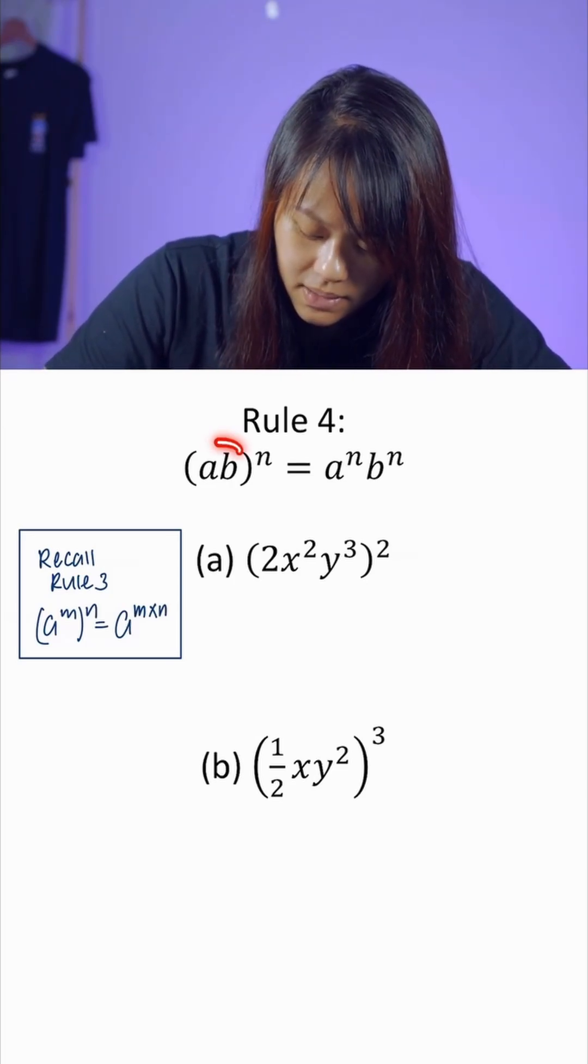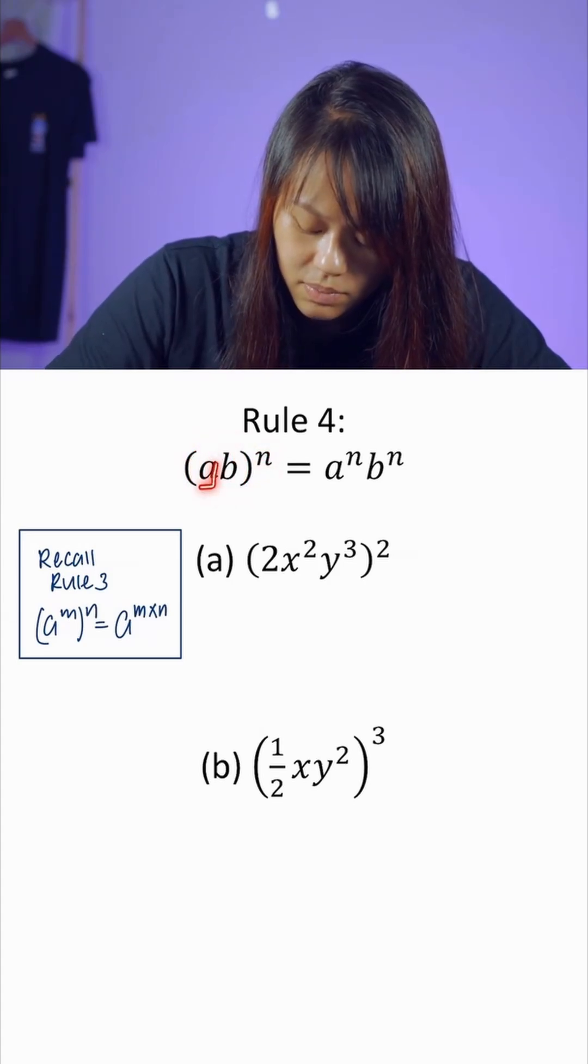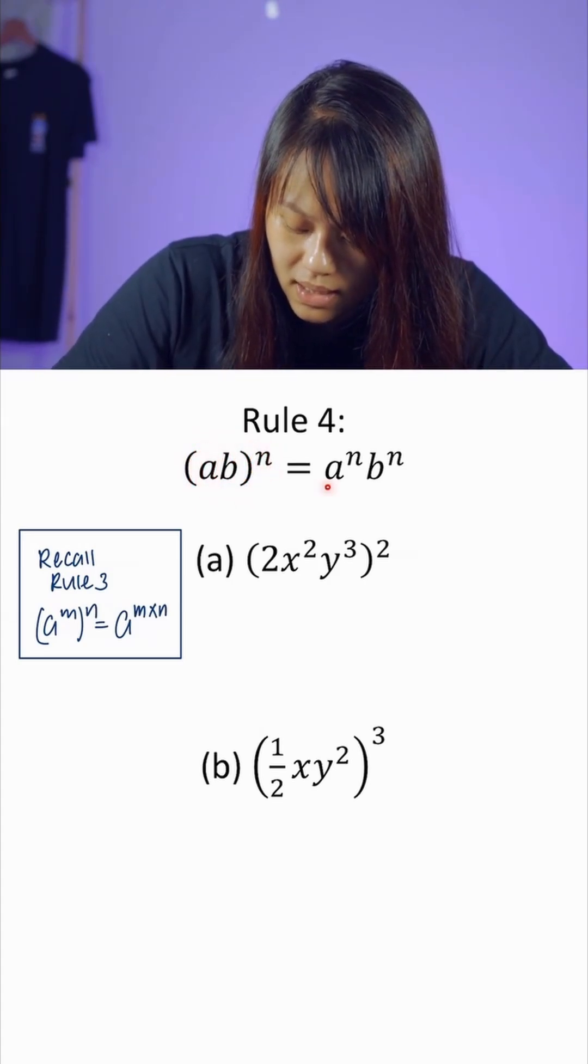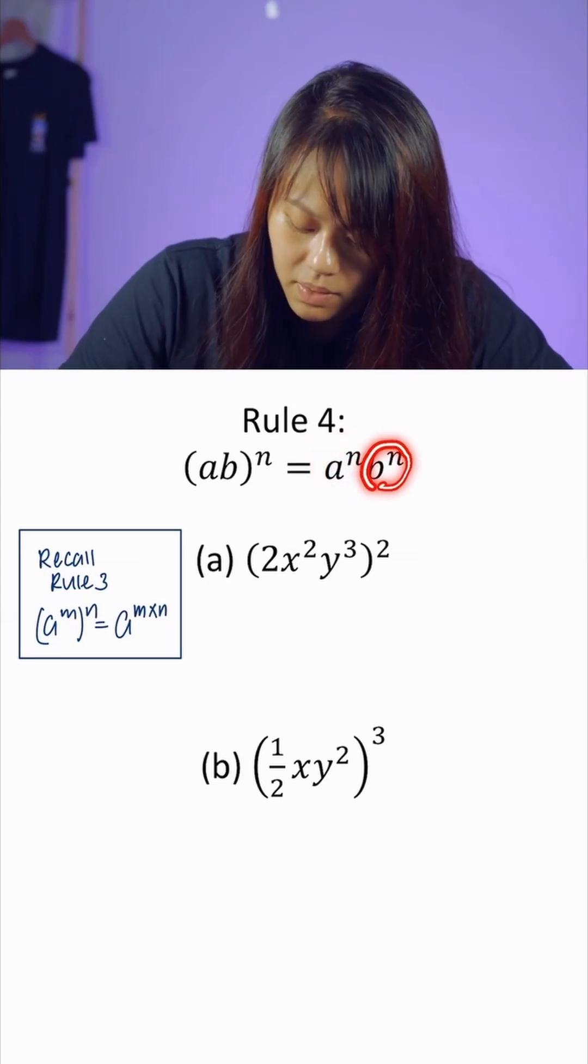It means that ab multiplies itself n times. So a will multiply by itself n times and we get a^n. Likewise for b, we'll get b^n.